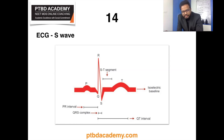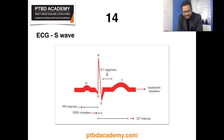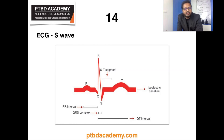Waves of ECG recorded by limb lead II are considered as typical waves. The normal ECG has the following waves: P, Q, R, S, and T. Einthoven named the waves starting from the middle of the English alphabet — P instead of starting from A. Major complexes in ECG: P-wave is the atrial complex; QRS is the initial ventricular complex; T-wave is the final ventricular complex. The S-wave is due to depolarization of the basal portion of ventricular muscle near the atrioventricular ring. The amplitude of the S-wave is around 0.4 millivolts. Simply put, the S-wave signifies the final depolarization of the ventricles at the base of the heart.